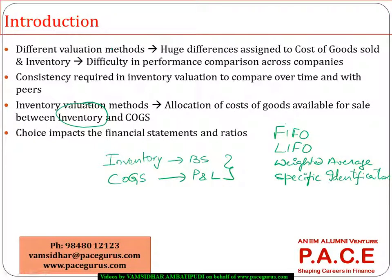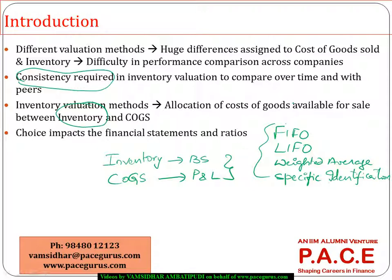Whatever mechanism the company is following, there should be consistency in that mechanism. Consistency is very much required and it will help the analyst do the comparison of the company's performance across time and also with peer companies. Once the method changes, it will impact the ratios and hence probably the investment decisions as well.